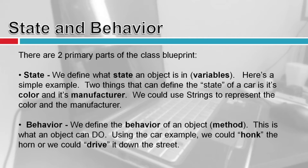There are two primary parts of a class blueprint. The first is state. We define the state of an object using its variables. For example, two things we can define for a car are its color and manufacturer. A blue Mitsubishi or a red Honda — we could use string variables to represent this state. I can also use other types like integers, say for the diameter of the tires.